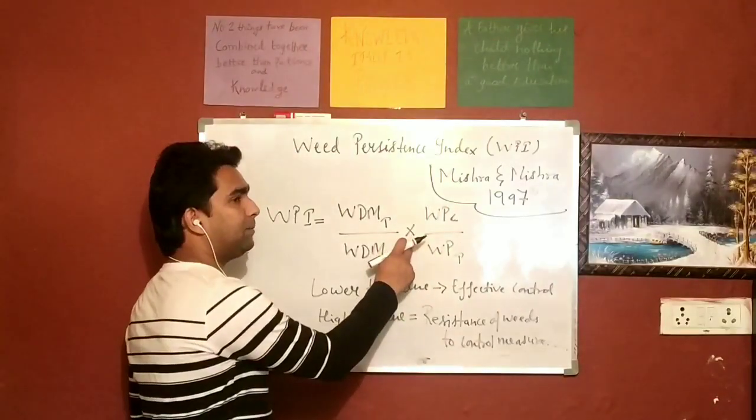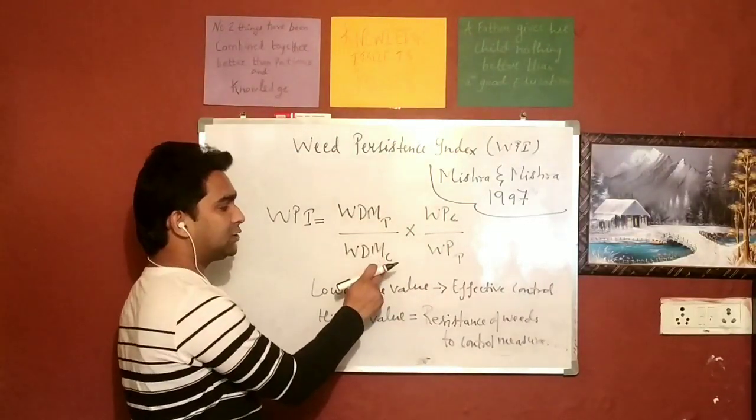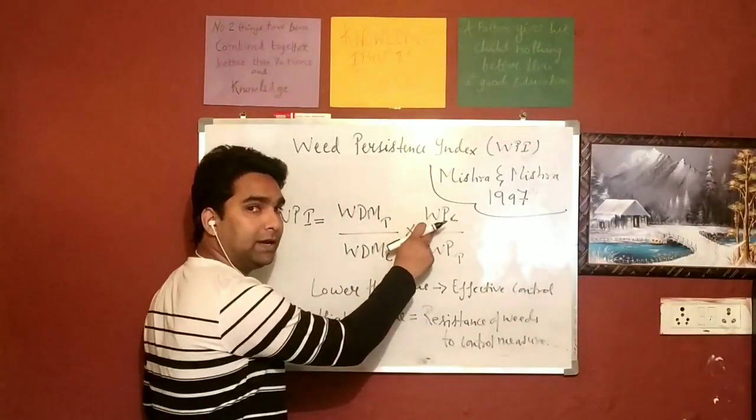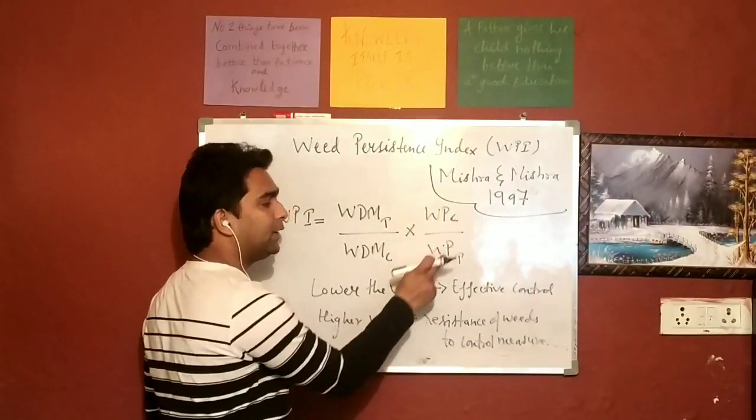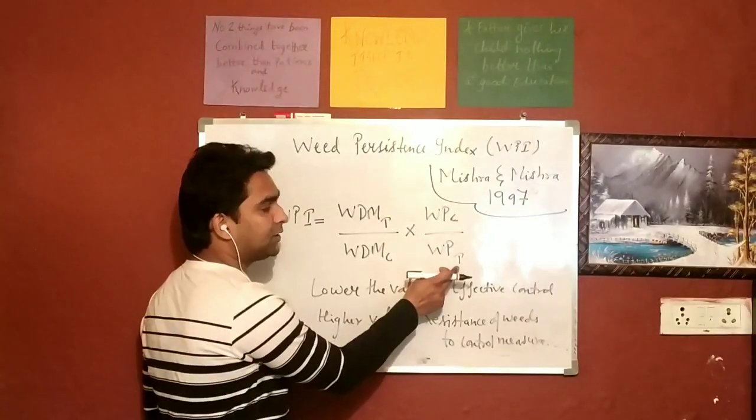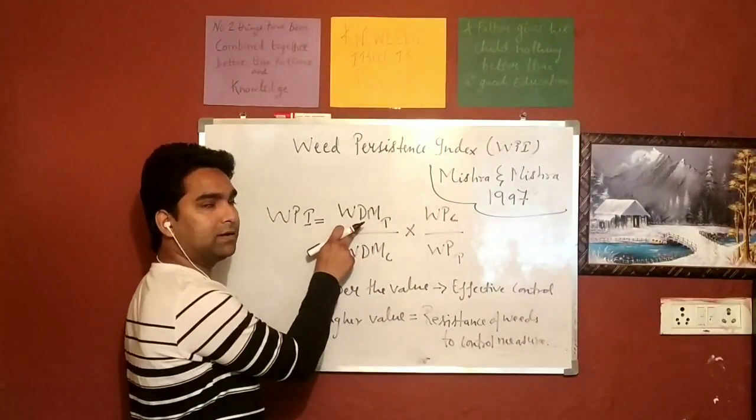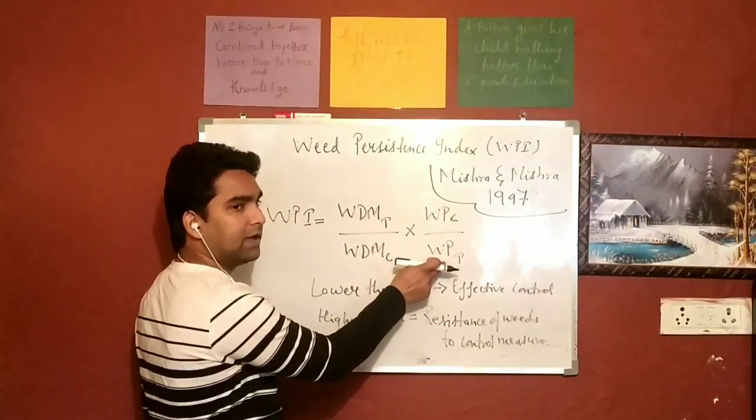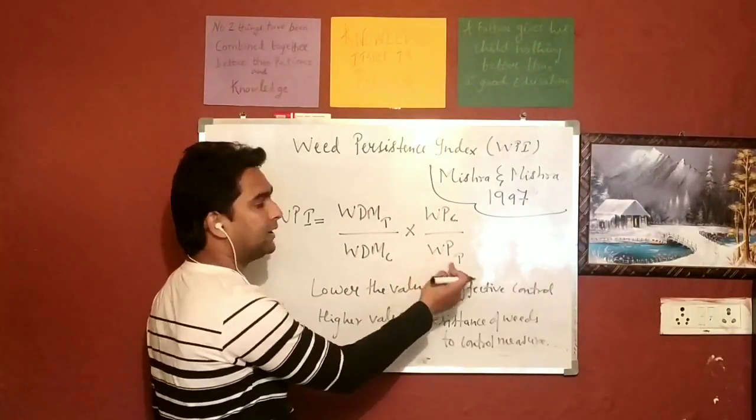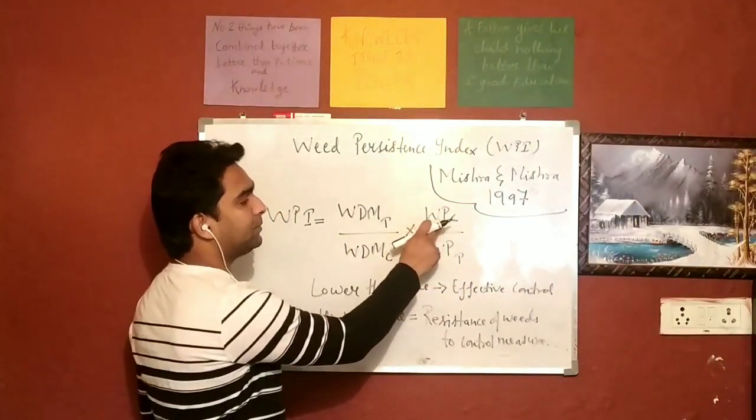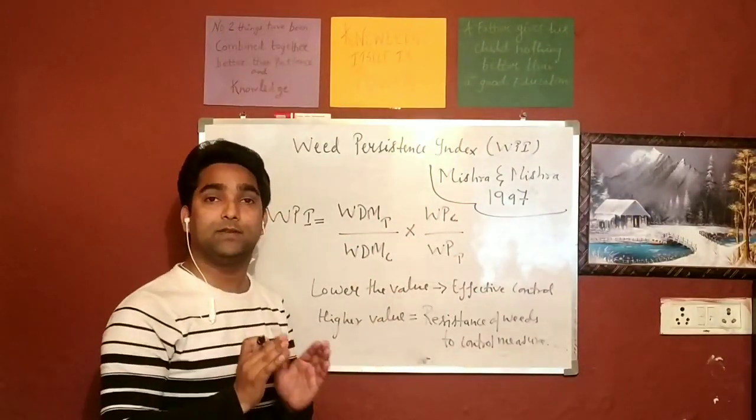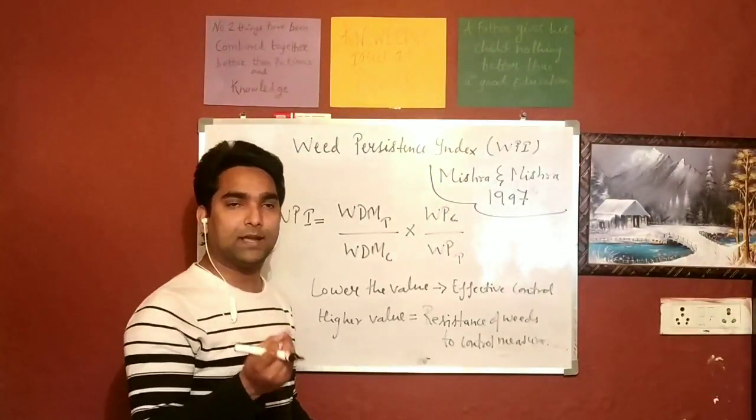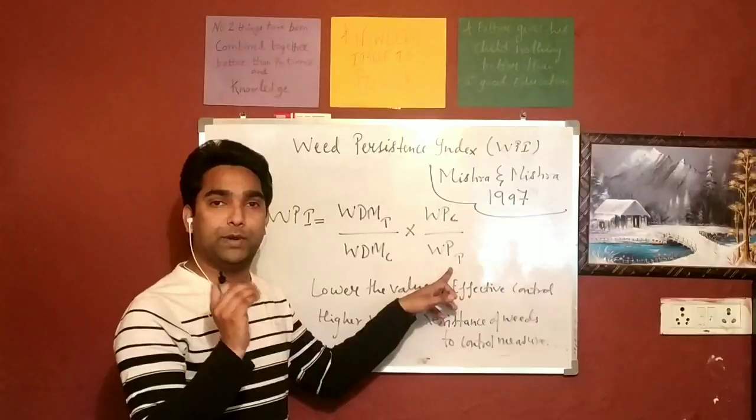Then it is multiplied by weed population in the control plot divided by weed population in the treated plot. Where WP is the weed population, and C indicates your control, that is the weed check, and T indicates the treated plot.